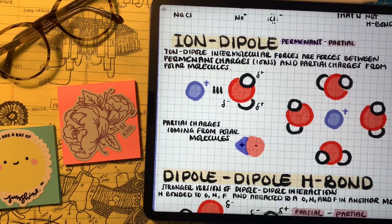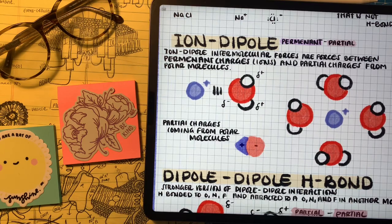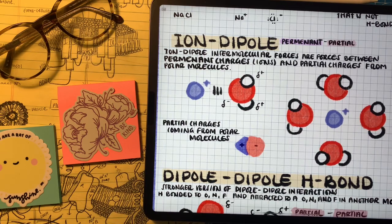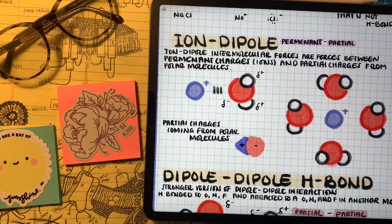We can talk about our second example of intermolecular forces: between a permanent charge from an ion and a partial charge from a dipole or polar covalent molecule. For example, a cation like sodium interacts with water — which has those partial charges — and it interacts more with the oxygen side, which carries the partial negative charge. If we flipped the example and had chlorine instead of sodium, the orientation of the water molecules would be flipped so the partial positive sides near the hydrogens would face the ion.